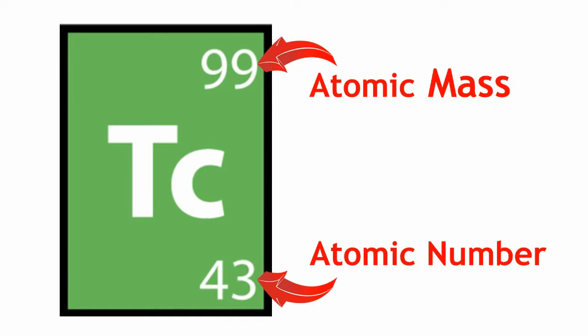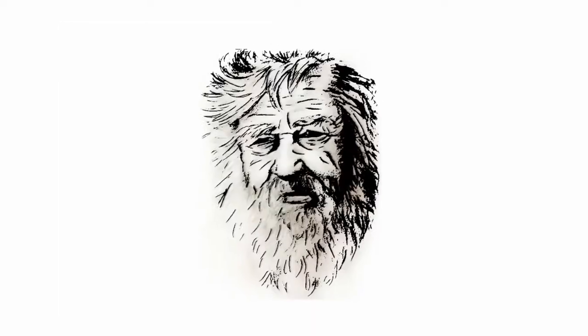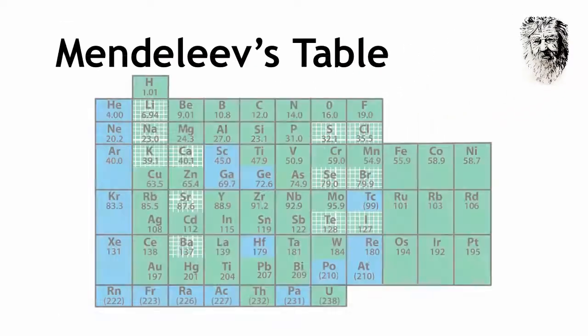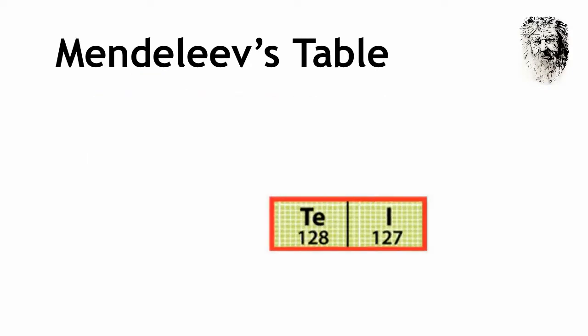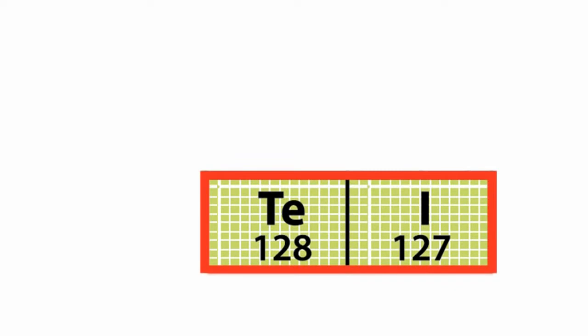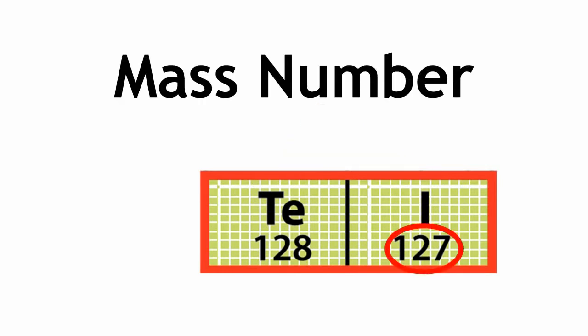Arranging the elements in order of their atomic number solves some of the problems associated with Mendeleev's table. For example, in Mendeleev's table, iodine, which has a mass of 127, should be put before tellurium, which has a mass of 128. Why? Because iodine has a smaller mass than tellurium.